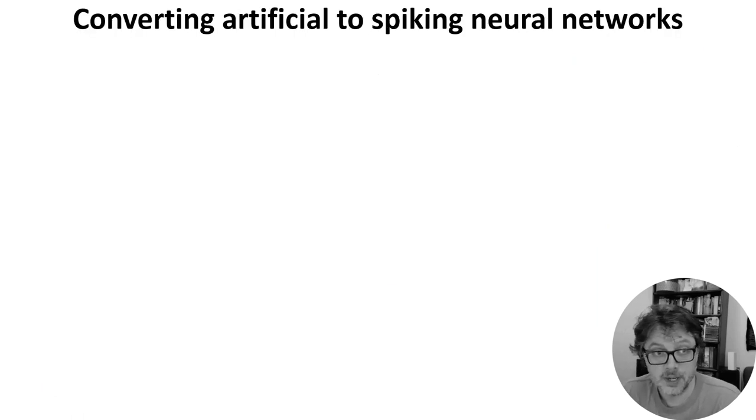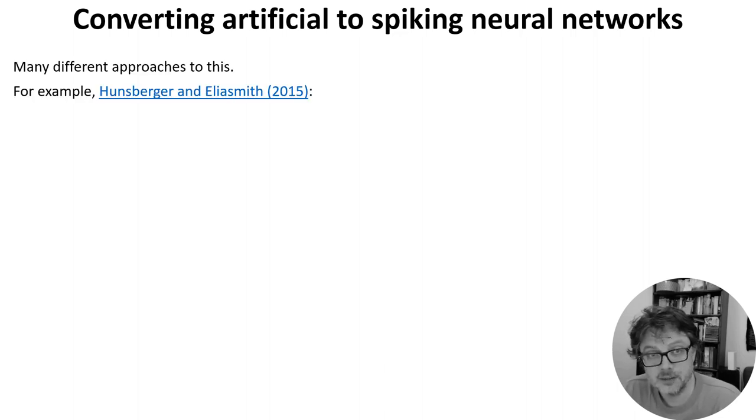Rather than trying to work with spiking neural networks directly we can start by doing something we know how to do like training an artificial neural network and then convert the result into a spiking neural network. There's a huge literature on this but I'm just going to mention two approaches from Chris Eliasmith and colleagues.